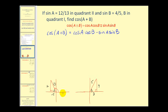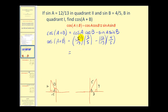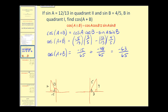We use this information to complete our identity. Cosine of angle a is negative 5/13, times cosine of angle b, which is 3/5, minus sine a times sine b, which is 12/13 times 4/5. This product gives us negative 15/65 plus negative 48/65, which equals negative 63/65. So the cosine of a plus b is equal to negative 63/65.